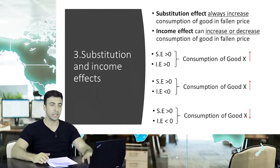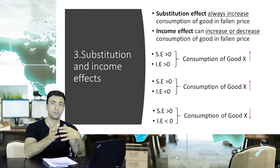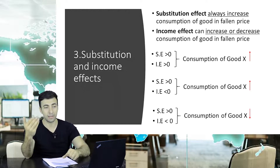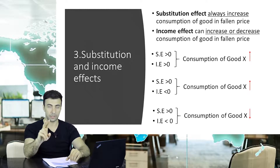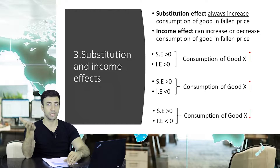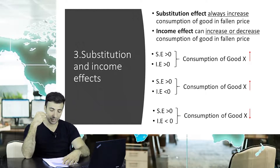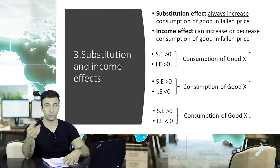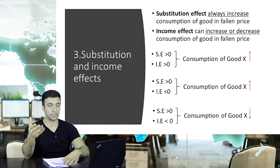Based on this analysis, we can describe three possible scenarios. S.E. is the substitution effect and I.E. is the income effect. Scenario one: if both the substitution effect and income effect are positive — greater than zero — consumption of that good will increase. Scenario two: if the substitution effect is greater than zero but the income effect is negative, yet smaller in magnitude than the substitution effect, consumption of the good will still increase.